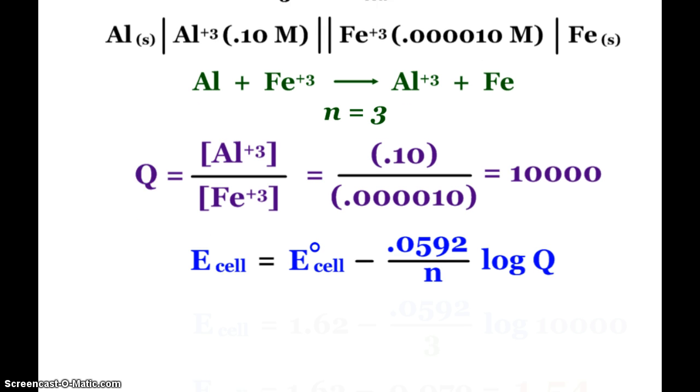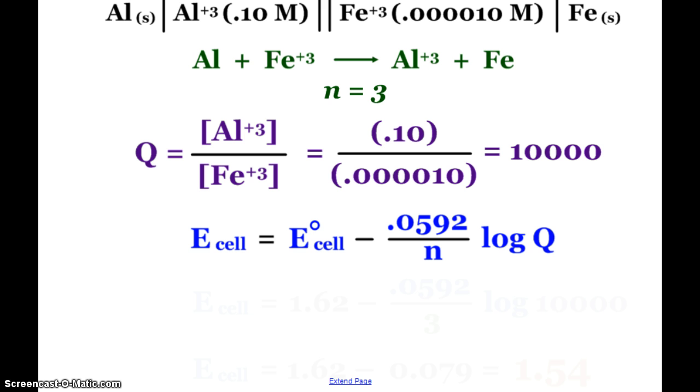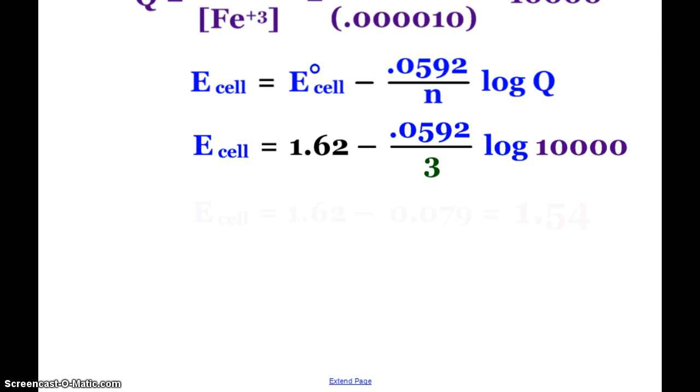So to find the cell voltage, I simply take the E° of the cell that was given to me. If it wasn't given to you, you simply use your potentials and calculate it. 0.0592 over 3 times log of 10,000. And when it's all said and done, we see that the cell voltage has decreased. And it has done so, not by a lot, but a decent amount. So it goes from being 1.62 down to 1.54. And yes, I should have that as volts, of course.